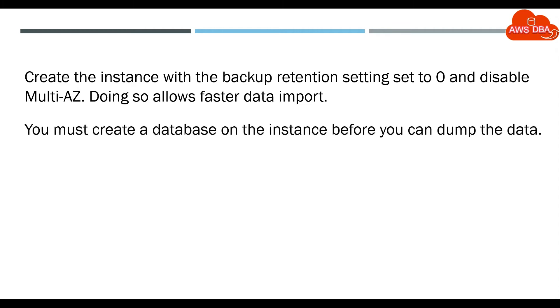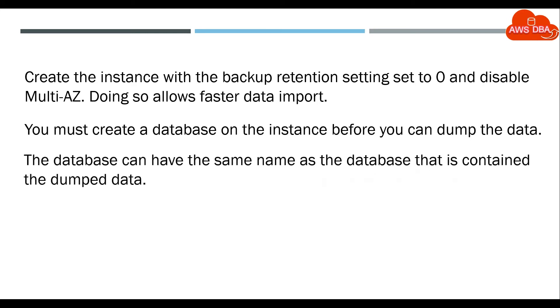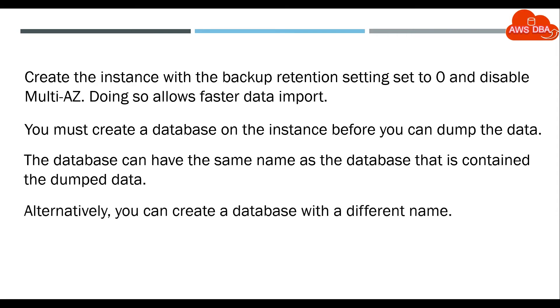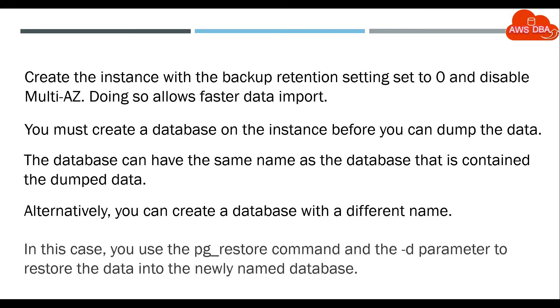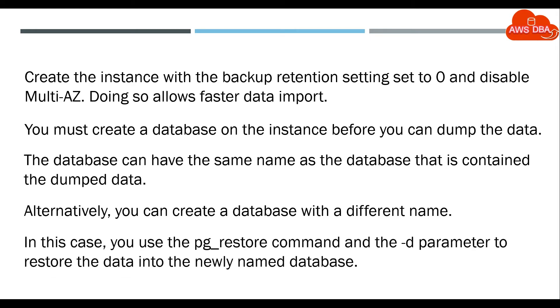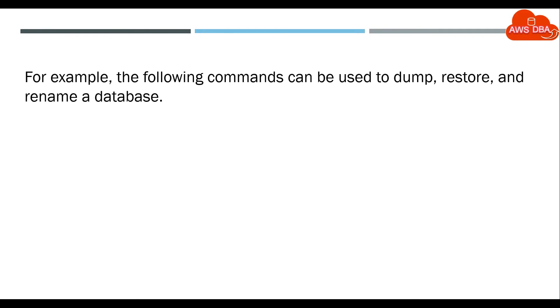You must create a database on the instance before you can dump the data. The database can have the same name as the database that contained the dumped data. Alternatively, you can create a database with a different name. In this case, you use the pg_restore command and the -d parameter to restore the data into the newly named database. For example, the following commands can be used to dump, restore, and rename a database.